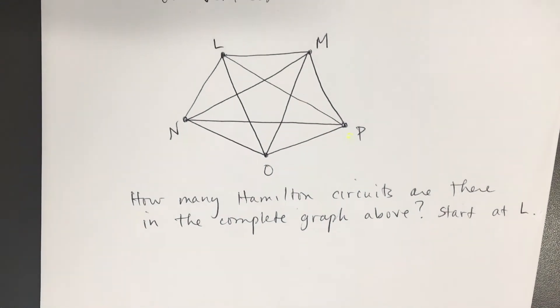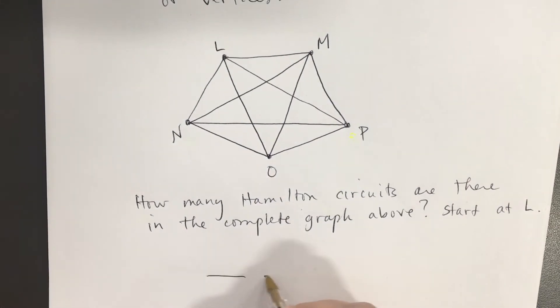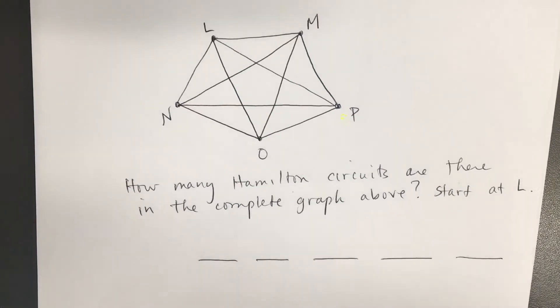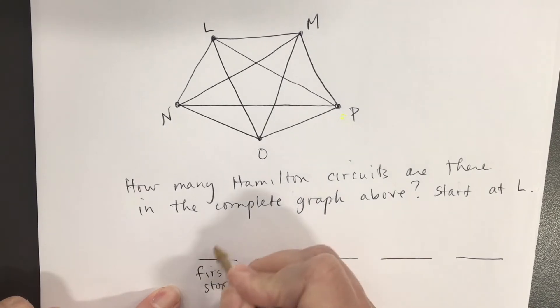So when I start at L, how many choices do I have for places to go visit? I have four. I'm thinking L is where I live and I have four errands to run around town and then I want to go back home. My first stop, I have four choices. So put a four in the blank.